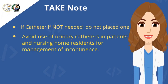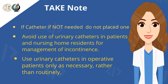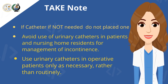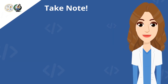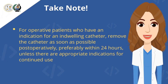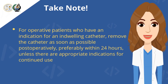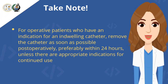Number 2 — avoid use of urinary catheters in patients and nursing home residents for management of incontinence. Number 3 — use urinary catheters in operative patients only as necessary, rather than routinely. Number 4 — for operative patients who have an indication for an indwelling catheter, remove the catheter as soon as possible postoperatively, preferably within 24 hours, unless there are appropriate indications for continued use.